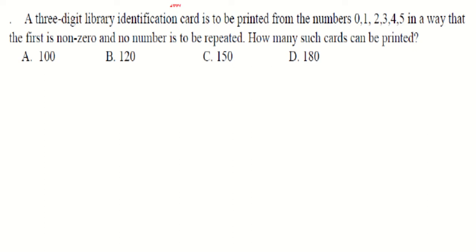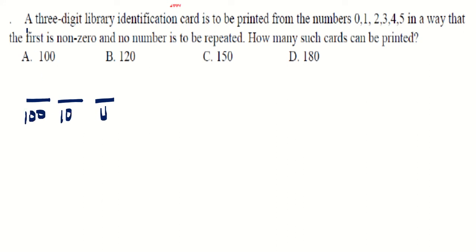We are going to apply the multiplication process. We need to prepare three-digit numbers with a units place, tens place, and hundreds place. The first digit — the hundreds place — cannot be zero, because if it is zero it becomes a two-digit number. So we have five choices for the hundreds place (zero cannot be written).